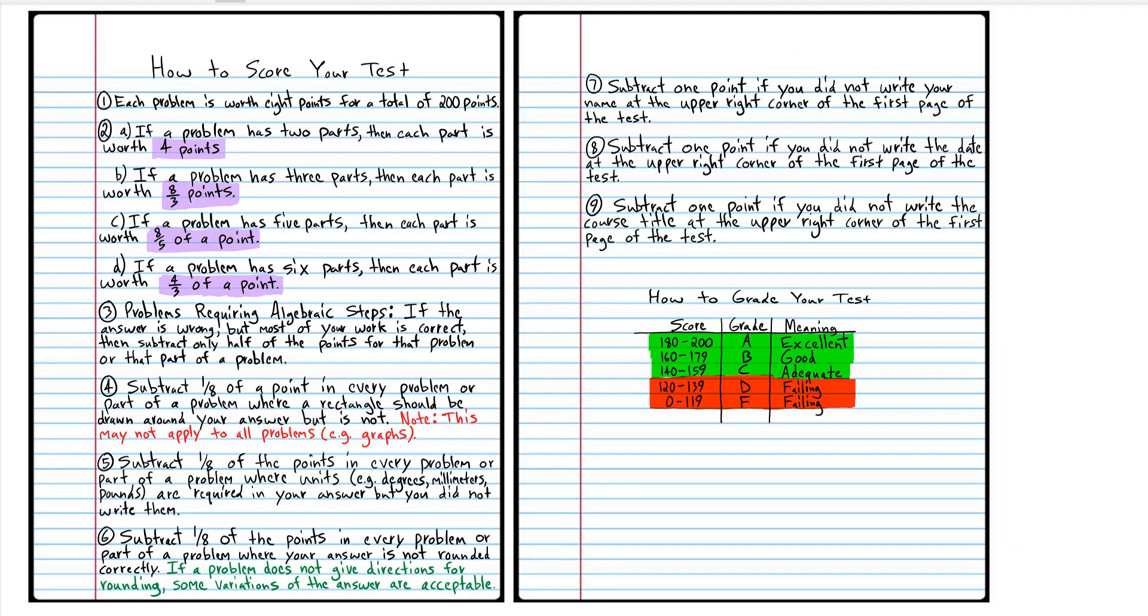Remember some problems indicate the rounding but other problems don't. So if a problem doesn't specify how to round, then you can just use your own discretion. So go ahead and score your test. And when you come back, click on the grading your test time code in the description section. And we'll talk about how to grade your test. So go ahead and score your test now.